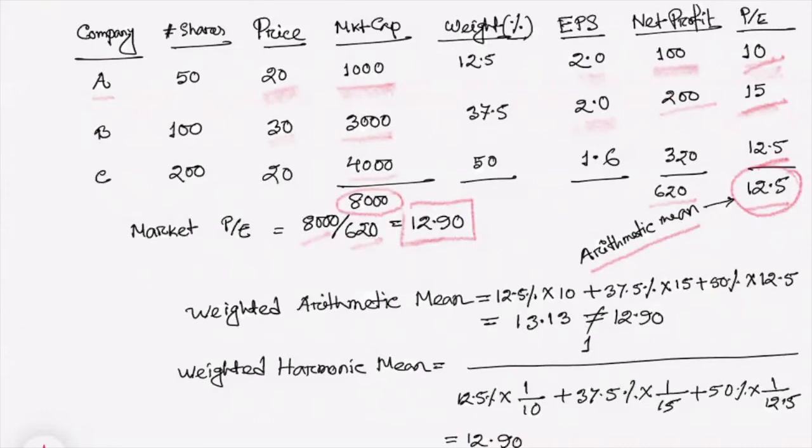So in that case, you have to take weighted average by market cap because all these companies—company A, company B, and company C—are not the same in terms of size. So if you take account of this size difference of the companies, you can take the weighted arithmetic mean. 12.5 is the weight of company A, 37.5 is the weight of company B, and 50 is the weight of company C.